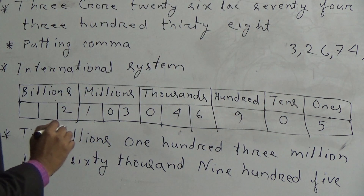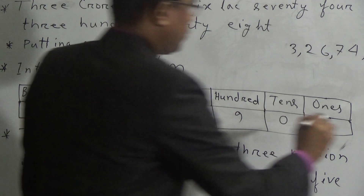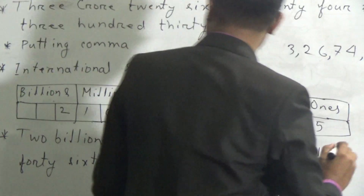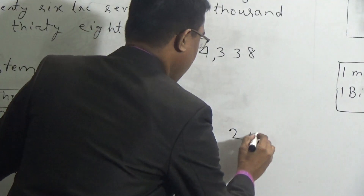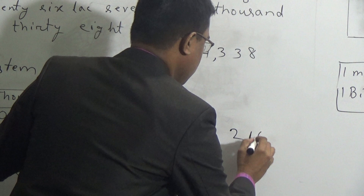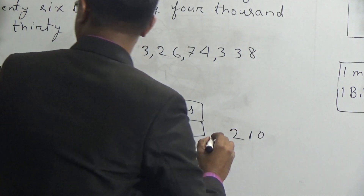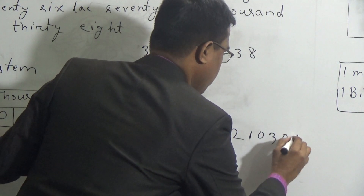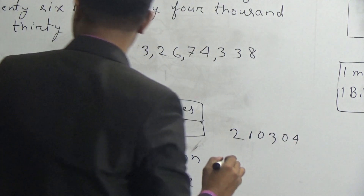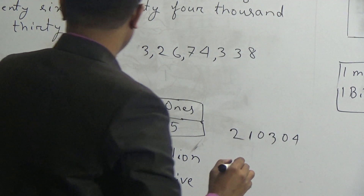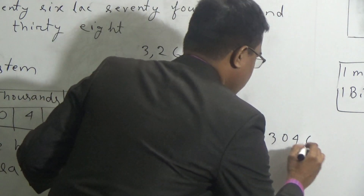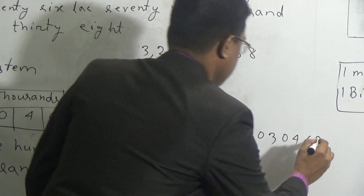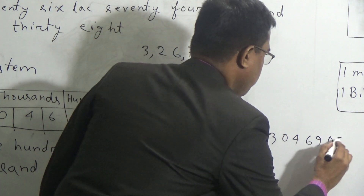Nine hundred five: in the 100s place we write 9, in the 1s place we write 5, and in the 10s place we write 0. So the number is: 2, 1, 0, 3, 0, 4, 6, 9, 0, 5.